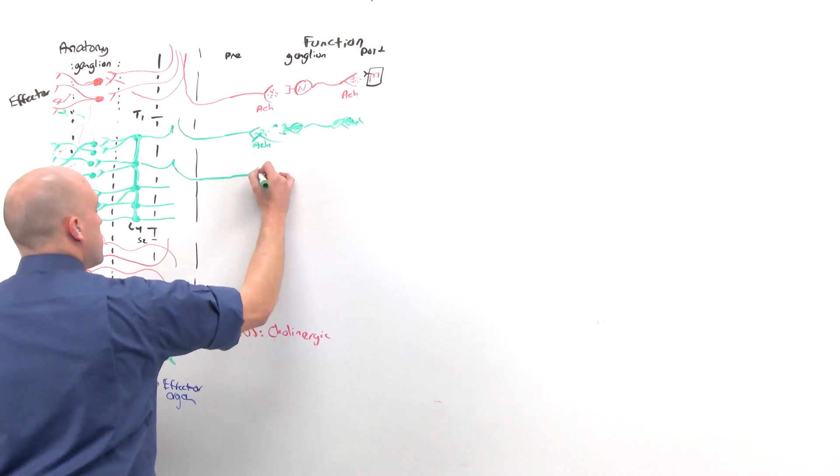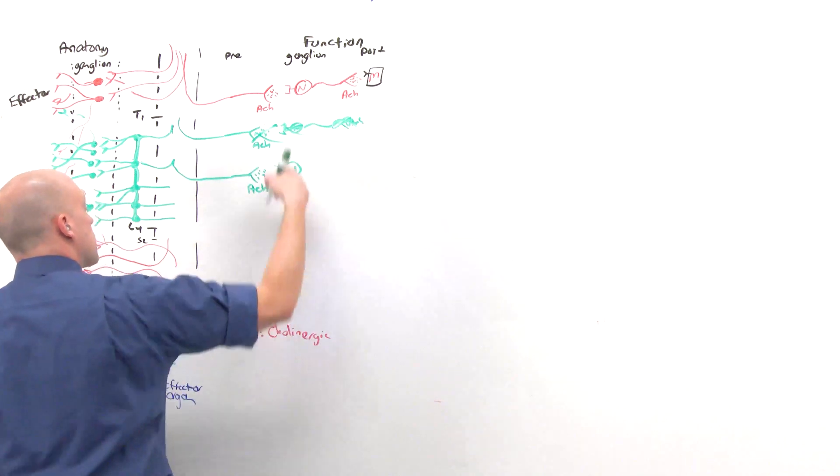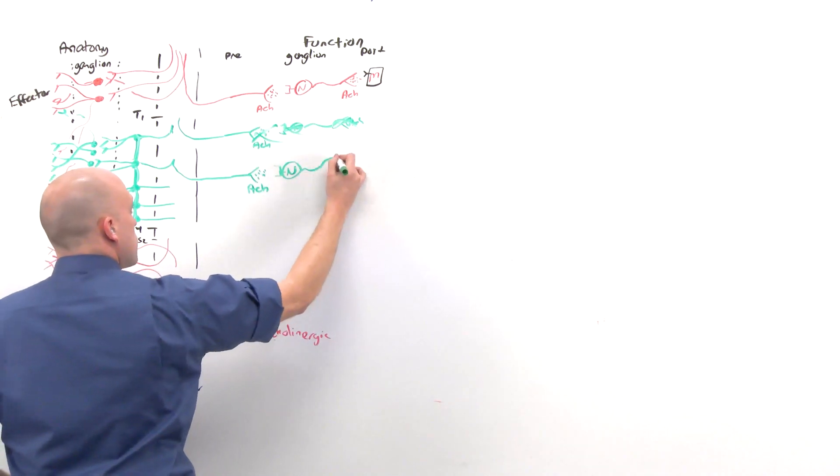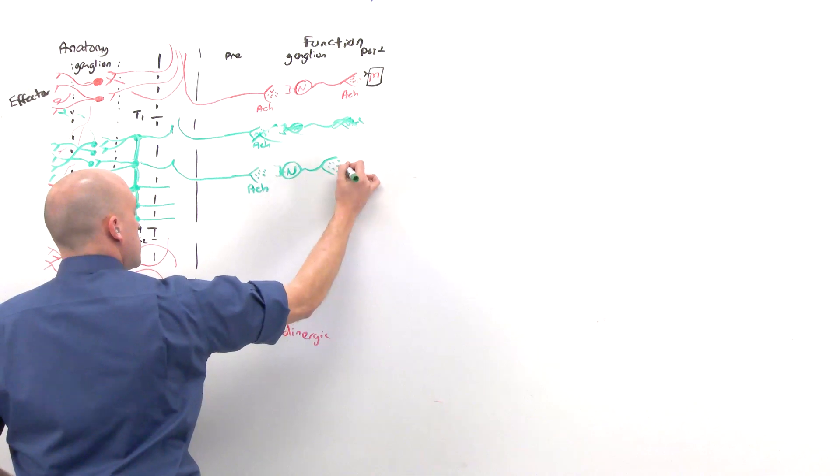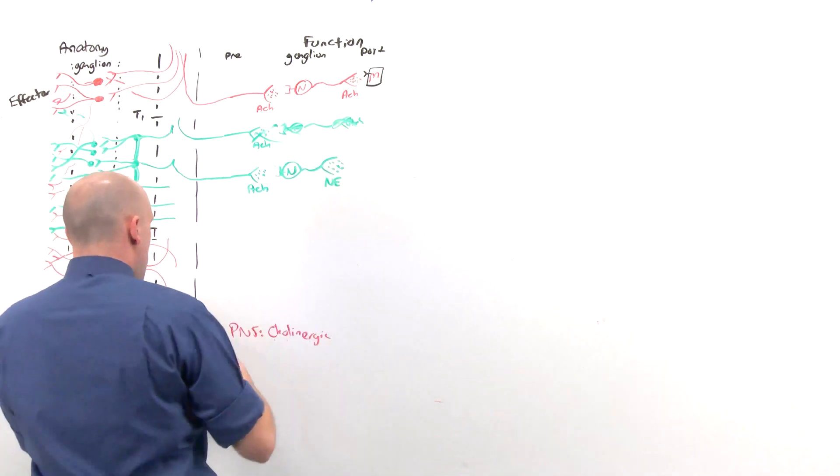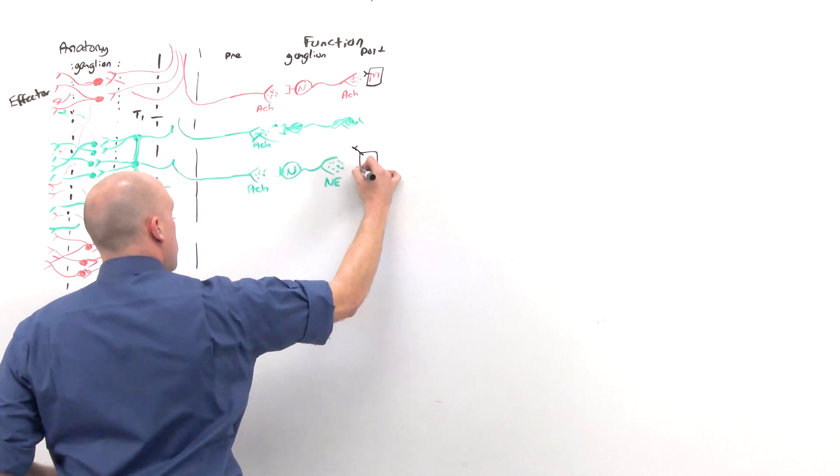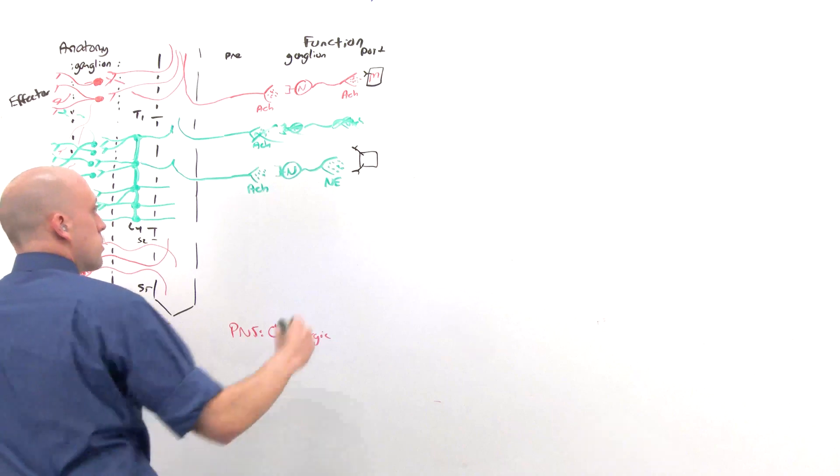At the ganglion, that primary first-degree neuron does still release acetylcholine, and it is still the nicotinic receptor that picks up the signal, just like in the parasympathetic. But at the level of the effector organ, the thing that gets released is norepinephrine. And on the effector cell, there are receptors for a number of different adrenergic receptors.